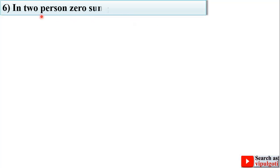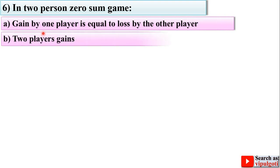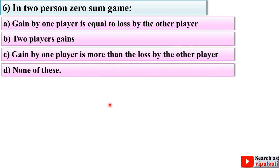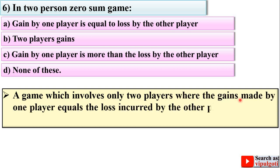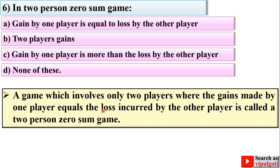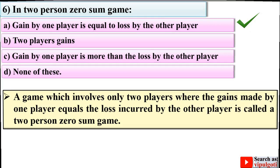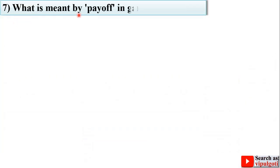Next question: in a two person zero sum game, options are as follows. Important note: a game involving only two players where the gains made by one player equal the loss incurred by the other is called a two person zero sum game. The gain by one player equals the loss by the other player, so A is the right answer.